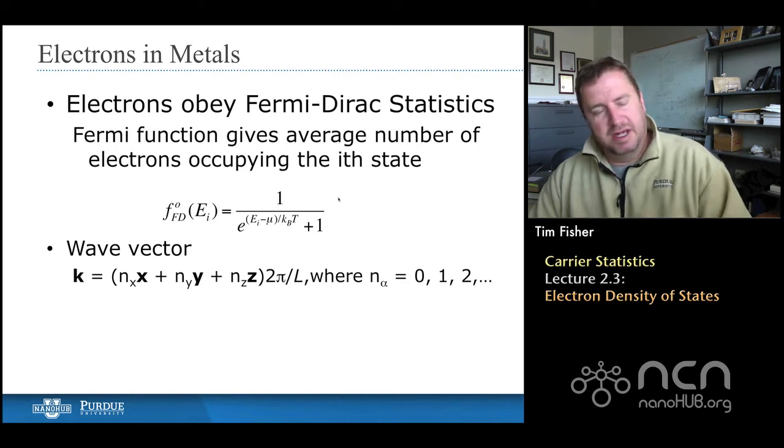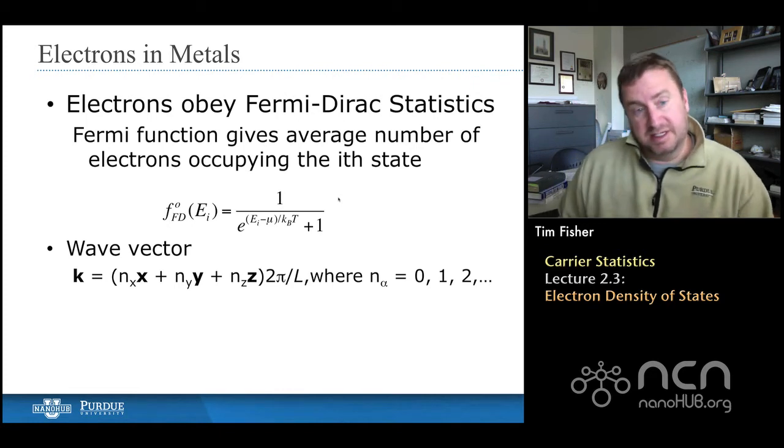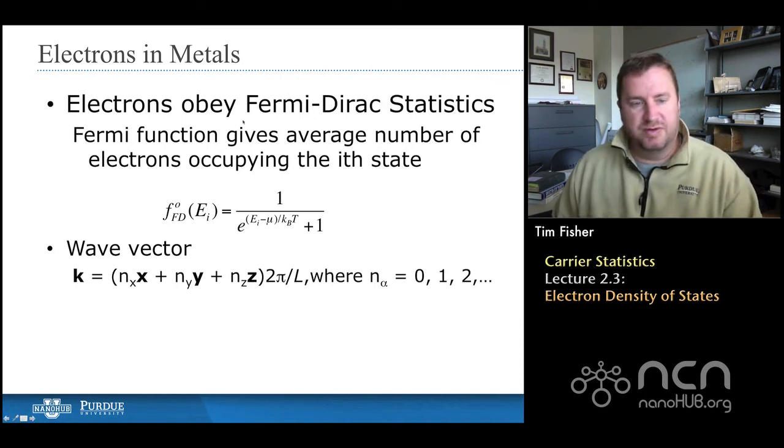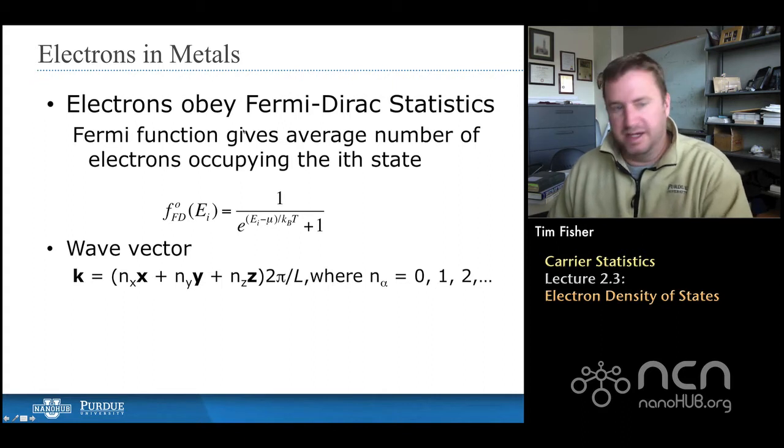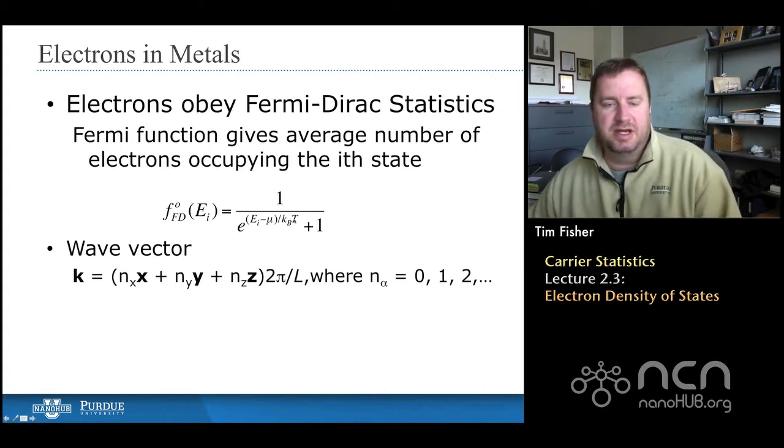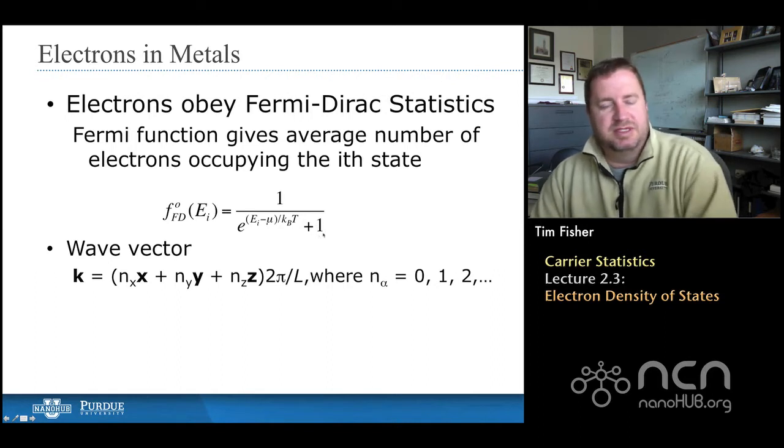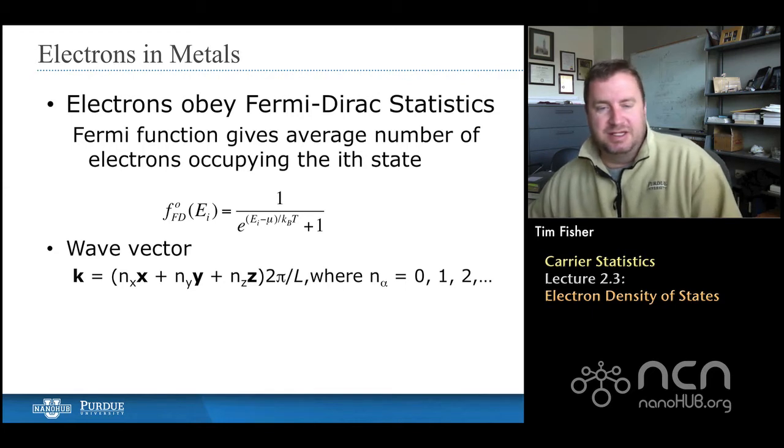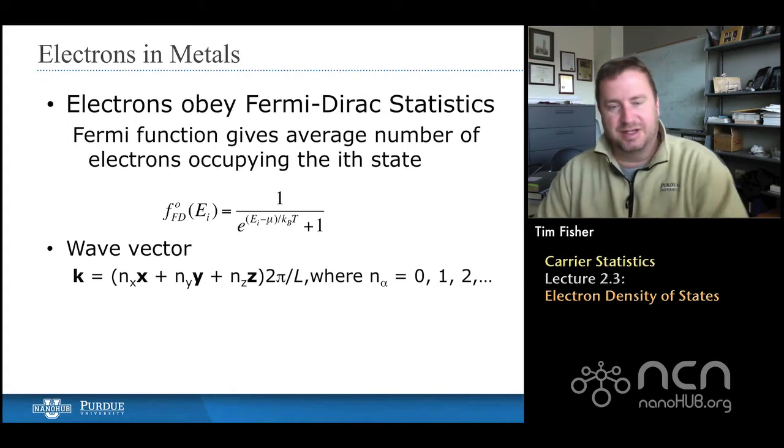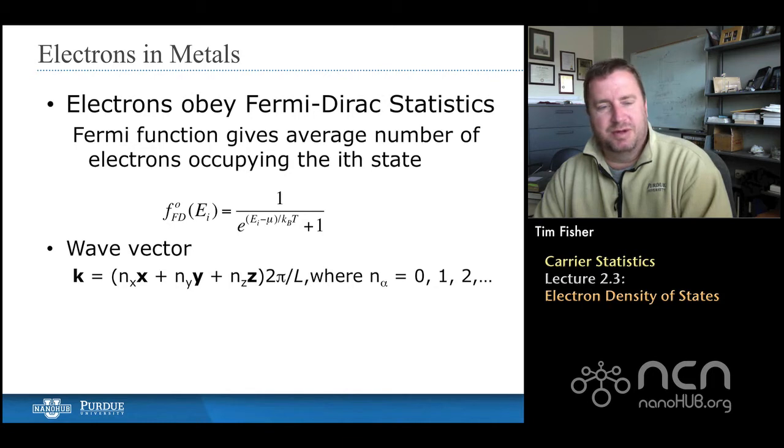So as we had mentioned at the beginning of this week, electrons obey Fermi-Dirac statistics. So they're different than the statistics that govern phonons. And the distribution function is F. And you see that in this case we have a plus one in the denominator. The only difference between Bose-Einstein statistics, which are valid for phonons and photons, and Fermi-Dirac statistics is this plus or minus sign in the denominator. So it's a very subtle difference mathematically but in terms of the numerical values they can be quite different.